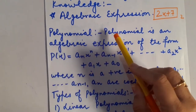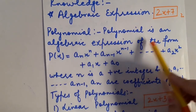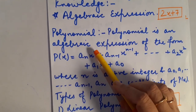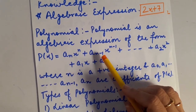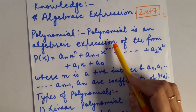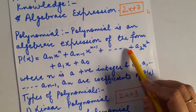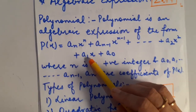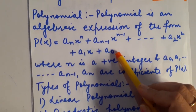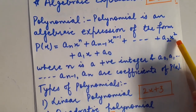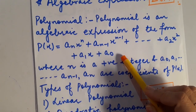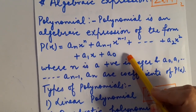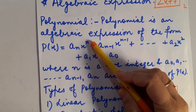So, let us start. Polynomial is an Algebraic Expression of the form P(x) = aₙxⁿ + aₙ₋₁xⁿ⁻¹ + ... + a₂x² + a₁x + a₀. Here, you can see that this is a polynomial in x, and the highest power of the variable present in it is n.